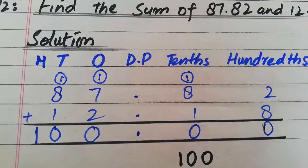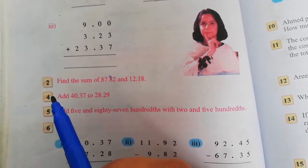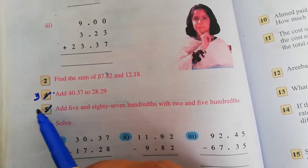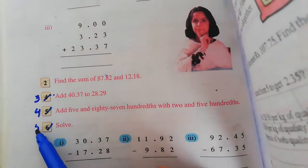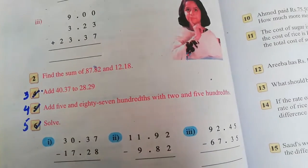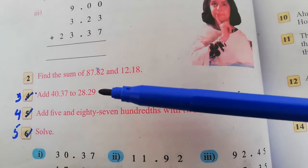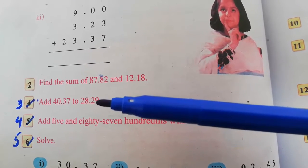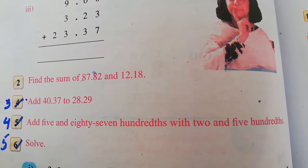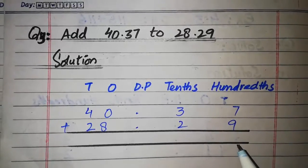اب ہم جائیں گے question number 3 کی طرف۔ Question number wrong بھی ہے تو 2 کے بعد 3 آئے گا — آپ یہاں 3 کریں، پھر 4 کریں، پھر 5 کرنا ہے۔ باقی 6، 7، 8 آپ نے ٹھیک کرنے ہیں۔ Question number 3: 840.37 plus 228.29 — یہ بھی addition کا ہے، تو solve کرتے ہیں question number 3.